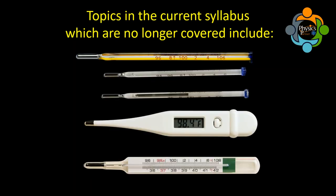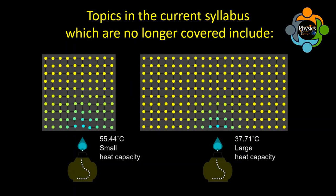Additionally, the detailed study of thermometers — including linearity, scale, and range — has also been removed. Another vital change is the removal of heat capacity from the syllabus. These are the major curriculum changes for the 2022-23 examination year.